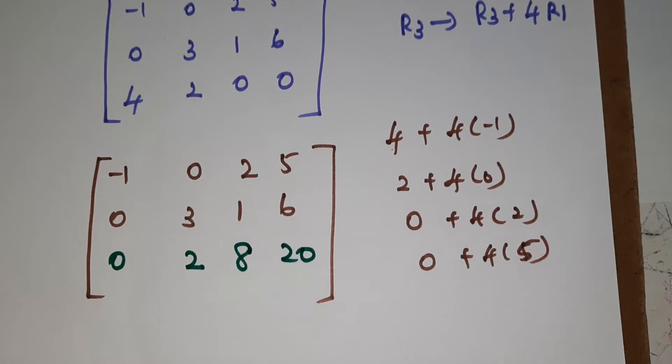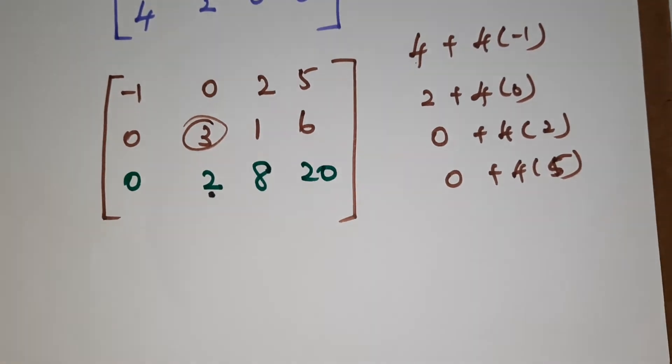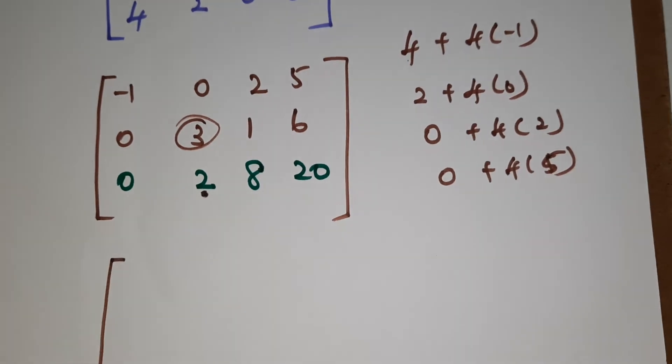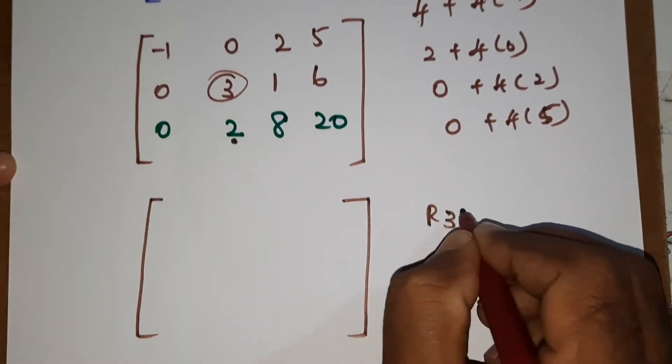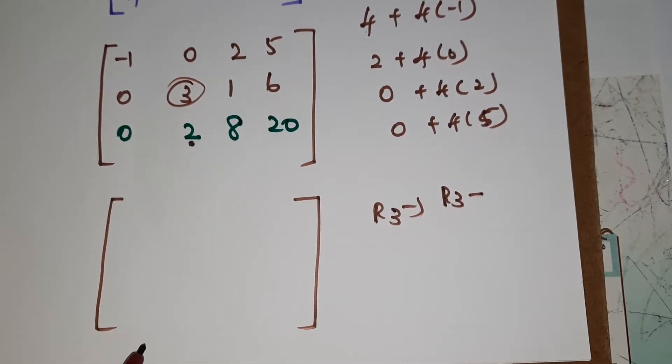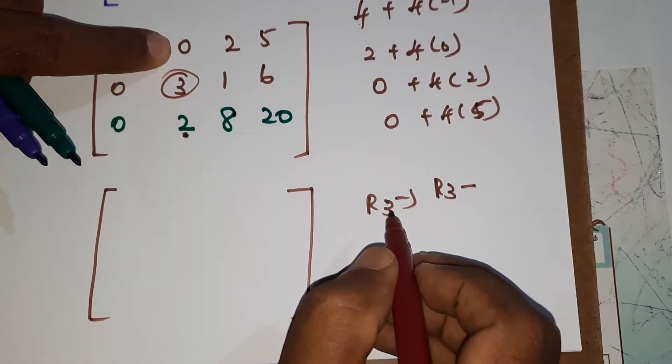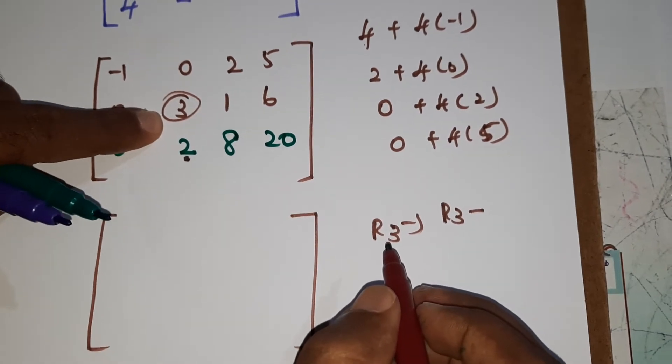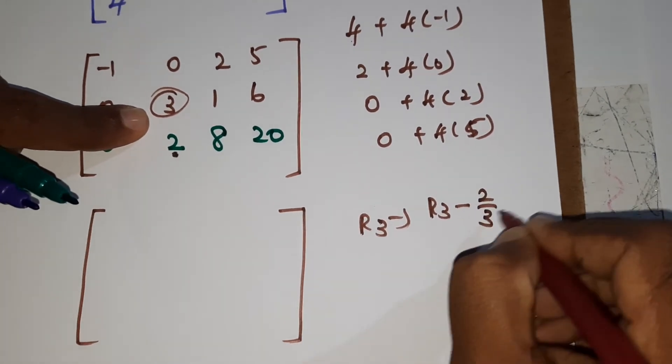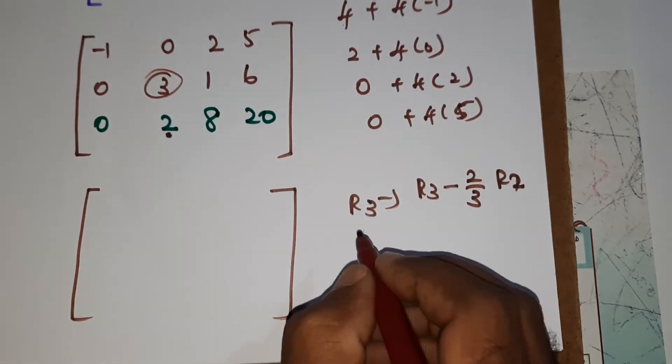So the third row, 4 into minus 4, minus 4 plus 4 means value will be 0. Second one, 2 plus 4 into 0 means 2 will come. Third row, 0 plus 4 into 2 means definitely value will be 8. Next, 0 plus 4 into 5 is 20. Now, the second row, second element, we have 3 is there. Third element also, underneath also, we need to show 0. What we have to do? R3 minus 2 by 3 into R2, because R1 we have 0.